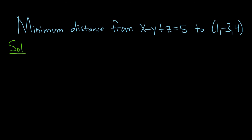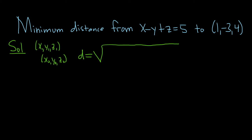Recall, given two points x1, y1, z1 and x2, y2, z2, the distance between the points is given by the following formula. It's the square root of x1 minus x2 squared, plus y1 minus y2 squared, plus z1 minus z2 squared.